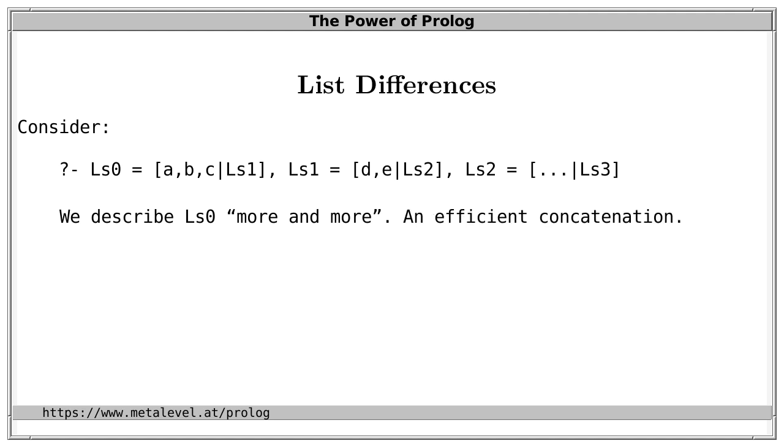Importantly, this is very efficient because this is simply a sequence of unifications where at each step only a single variable becomes instantiated. Procedurally speaking, this allows us to append elements to a list in a way that is independent of the length of the list we have already constructed.